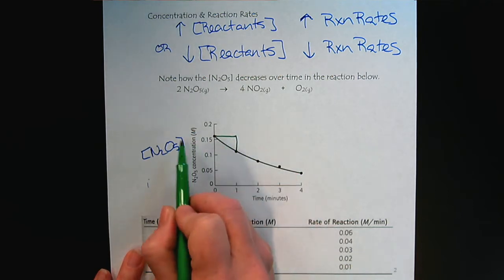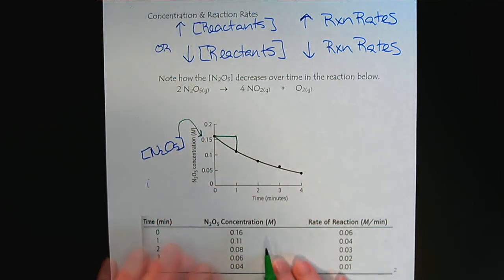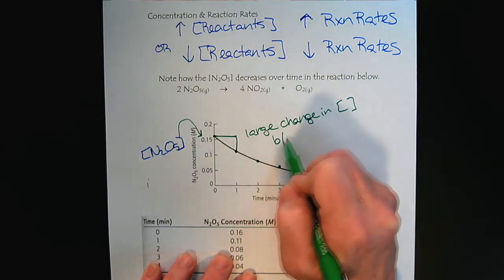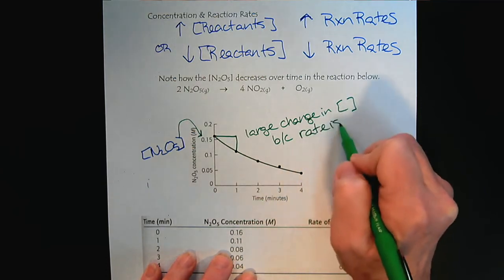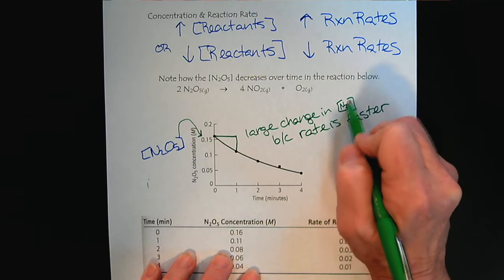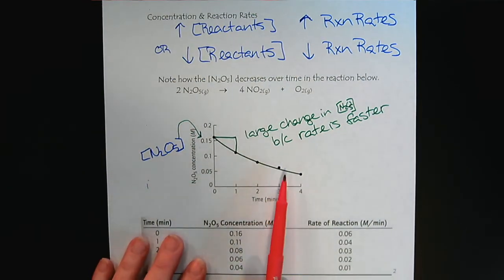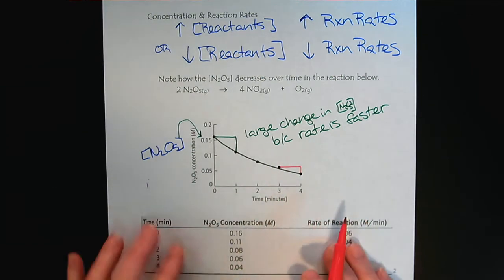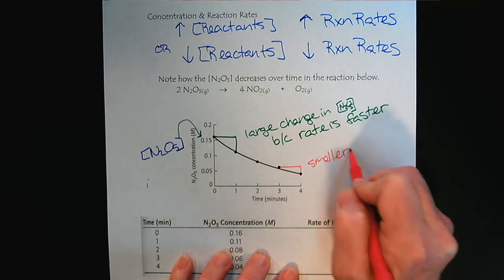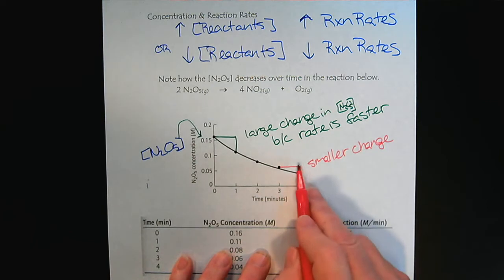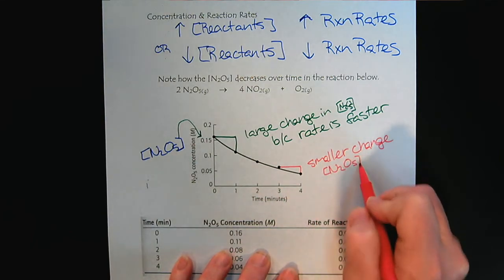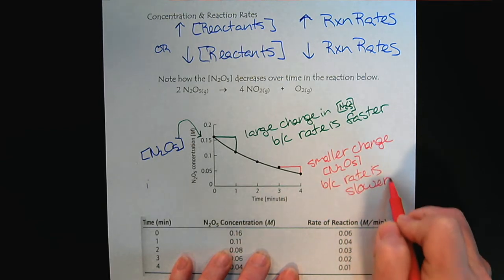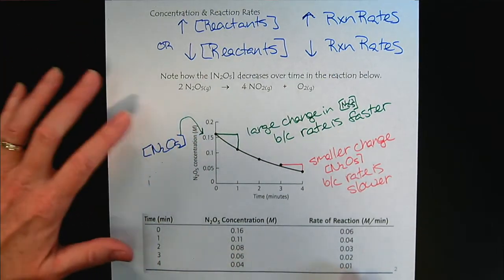When the concentration of dinitrogen pentoxide is high, we get a large change in concentration because the rate is fast. Later in the reaction progress, as the dinitrogen pentoxide decreases, the change becomes much smaller — we get a smaller change in our reaction rate. We're measuring the reaction rate by the change in our reactant, and a smaller change reflects a slower rate. This graph illustrates how concentration affects reaction rates.